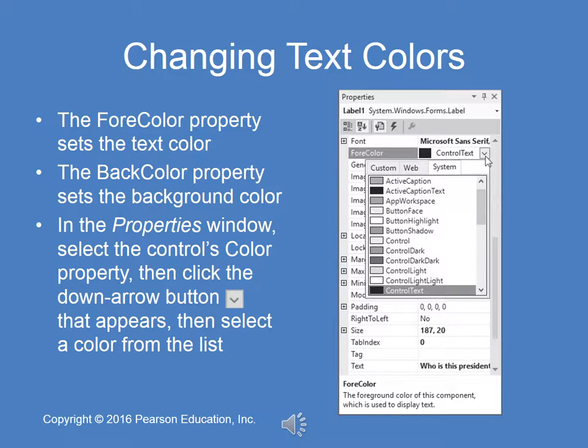The fore color property for a label sets the actual color of the text. The back color property sets the background color. In the properties window, select the control's color property, click the down arrow button, and select a color from the list — the standard colors available in any Windows application.